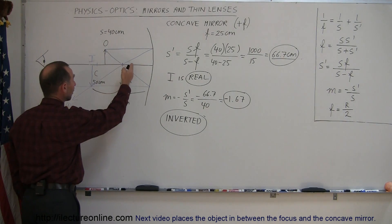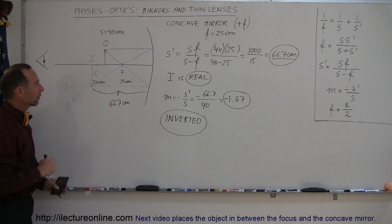Our next example, we're going to move the object closer to the mirror, between the mirror and the focal point, and then let's see where the image appears then.